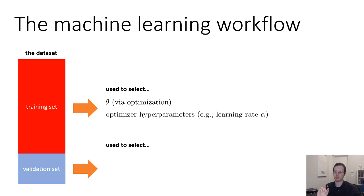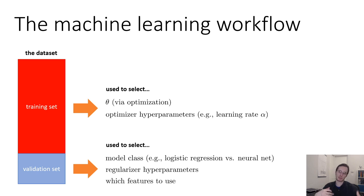But the validation set can be used to select your model class. Like, are you using logistic regression or a neural net? Is it a neural net with 10 layers or 20 layers or 160 layers? It can be used to select the parameters of your regularizer, that λ. It can be used to select which features to use, all this stuff. So, basically, the validation set will be used to select those things that influence overfitting. And they will be selected so as to avoid overfitting.